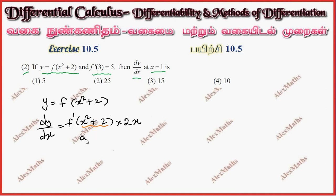Now we have at x equals 1. So at x equals 1, substitute: this is f dash of 1 squared plus 2, times 2 times 1. So this total becomes f dash of 3 times 2.